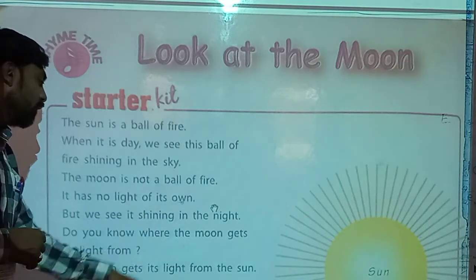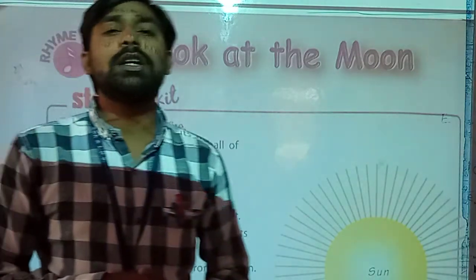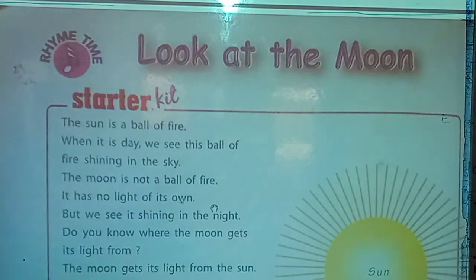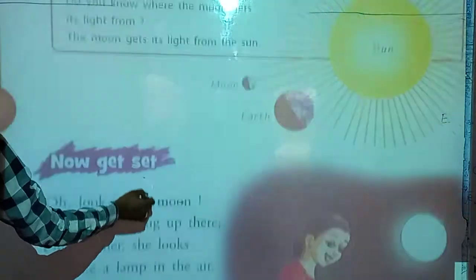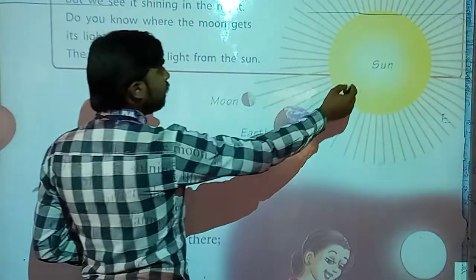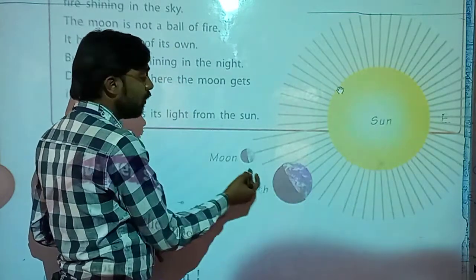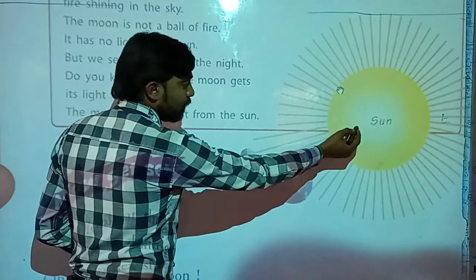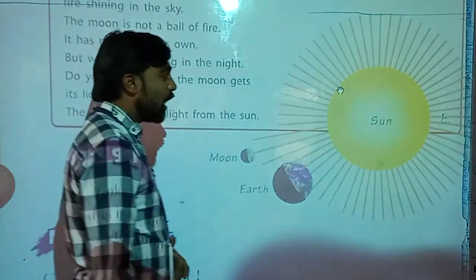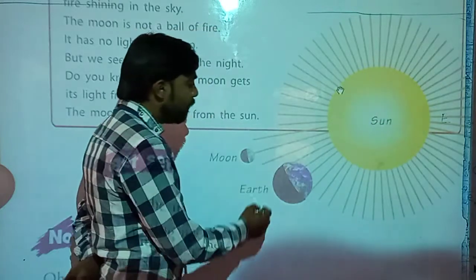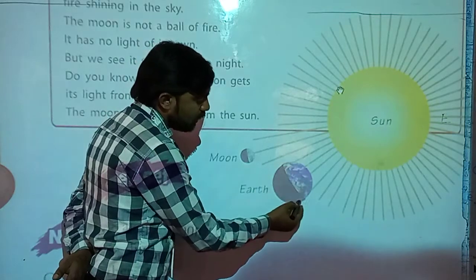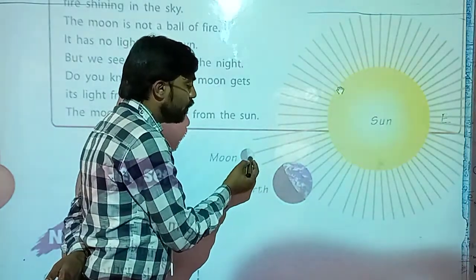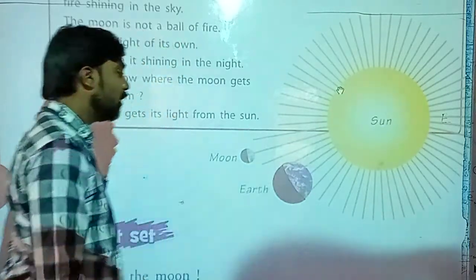The moon gets its light from the sun. Now students, you can see here — this is the sun, earth, and moon. In daytime, we can see the sun; it is shining and has its own light. At nighttime, this side night is there and you can see the moon. The moon gets light from the sun, and that's why it shines in the sky at night.